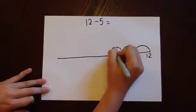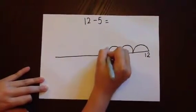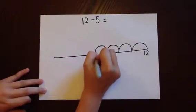As the jumps are going backwards along the line, it helps to reinforce the idea that numbers will be getting smaller in subtraction.